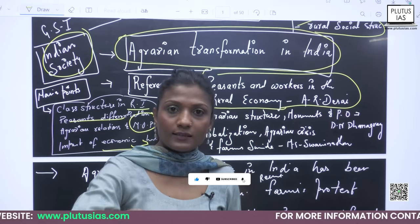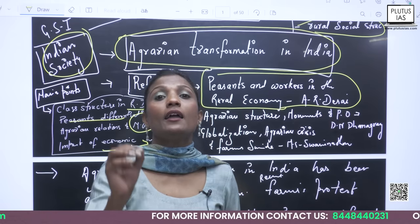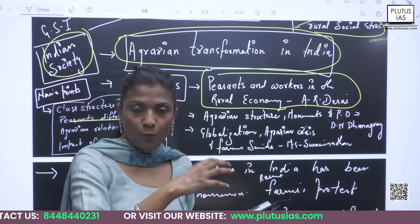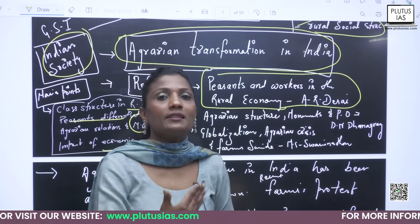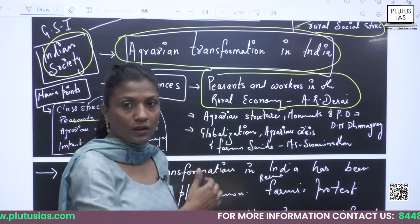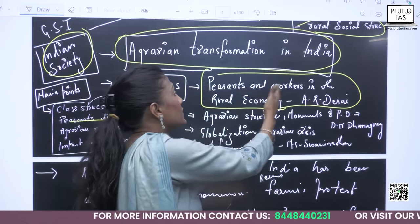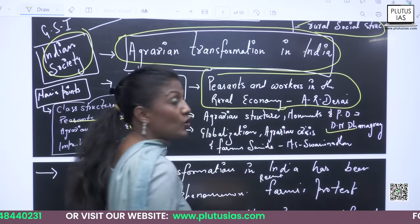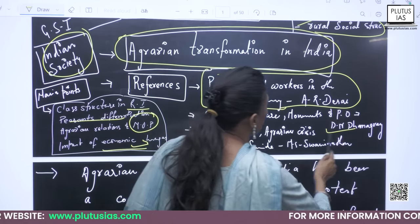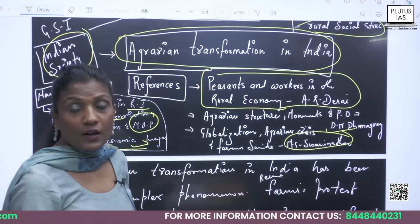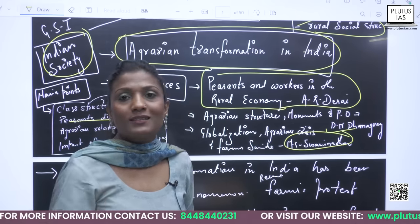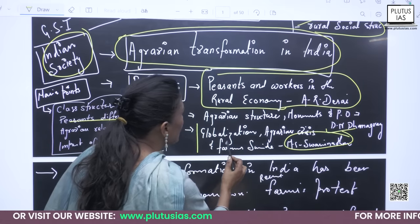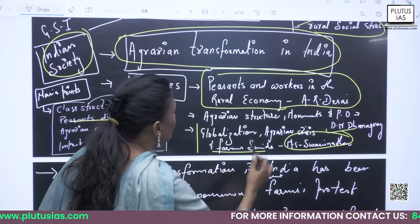You have to write GS1, but you need to identify important topics. You need to say this is not just about supporting farmers in Punjab generally. You can refer to A.R. Desai — in his book Peasants and Workers in the Rural Economy, he brings out similar points. You can also refer to M.S. Swaminathan, considered the father of the Green Revolution. You can reference his book: Globalization, Agrarian Crisis and Farmer Society.